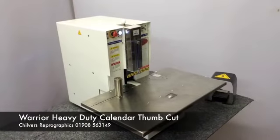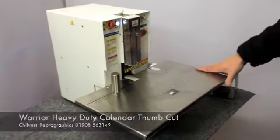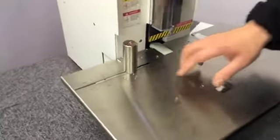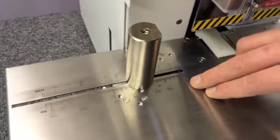This is the Warrior Heavy Duty Calendar Thumb Cut Punch with a nice big working table. You can do up to an A2 calendar on the short edge, all the way down to A6.